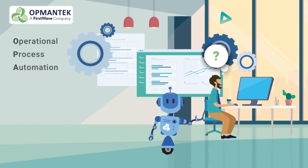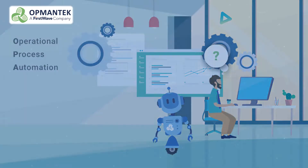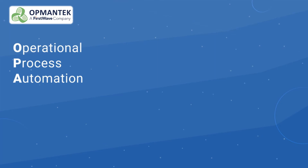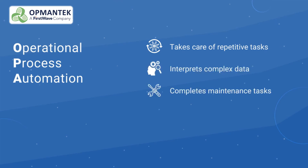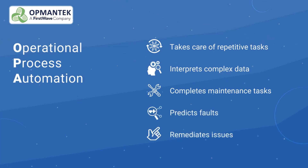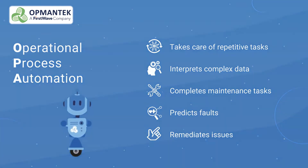But how does that help me? Well, the purpose of OPA is to get the right systems and workflows in place to remove repetitive tasks from your workload, interpret complex network data for you, assist you with advanced maintenance tasks, predict faults before they even arise, and remediate issues on your behalf. In short, OPA serves to augment a network engineering or system administration role.